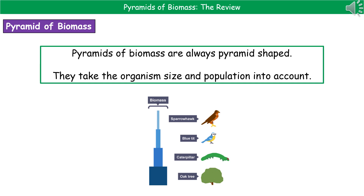The way we draw them is the same as the way we draw a Pyramid of Numbers, with the length of the bar representing the actual amount — either the numbers or the biomass, depending on which pyramid we're drawing. We also need to make sure that we've got our producer at the very bottom, then the primary consumer goes on top of that, and then the secondary consumer and so on.